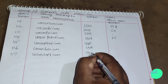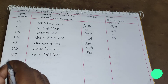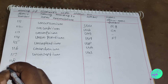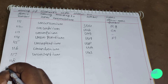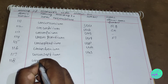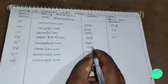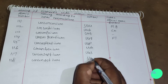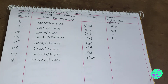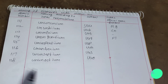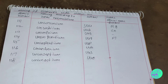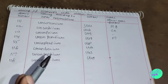For element 118: 1 = un, 1 = un, 8 = oct, plus '-ium' gives Ununoctium. The symbol is Uuo. Those are the elements with atomic number greater than 100. You can practice this easily. Thank you children, keep watching my videos and please subscribe to my channel.